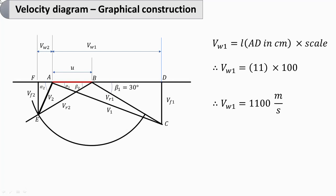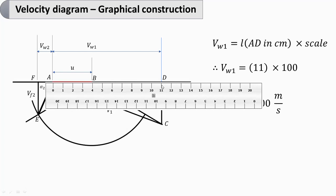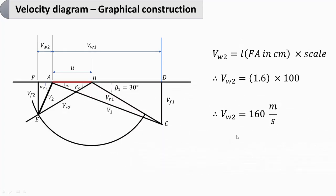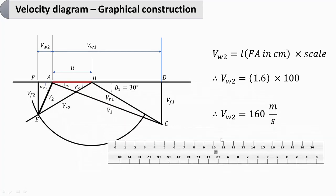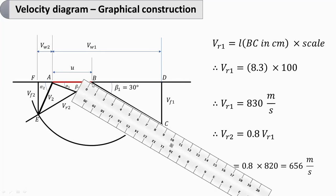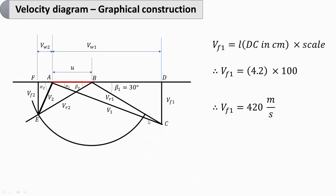Now we measure the various velocity components. VW1 is the length AD multiplied by scale: 11 centimeter into 100 gives 1100 meter per second. VW2 is length FA: 1.6 centimeter into 100 gives 160 meter per second. Relative velocity at inlet Vr1 is length BC: 8.3 into 100 gives 830 meter per second. Multiplying by 0.8 gives Vr2 as 664 meter per second, represented by 6.5 centimeter on the diagram.